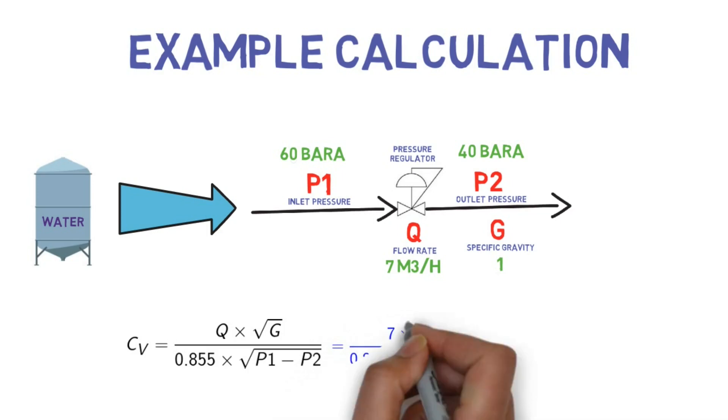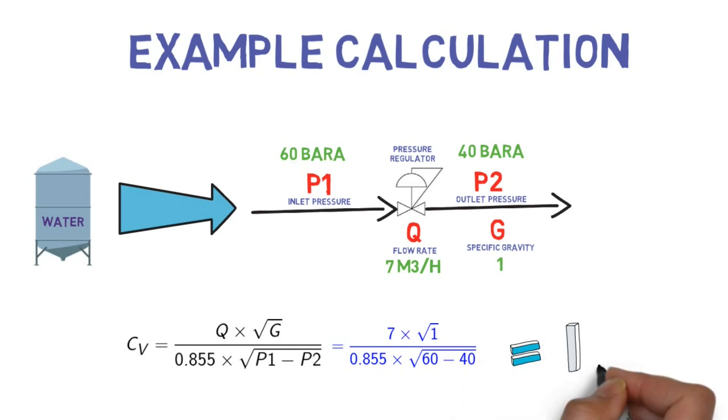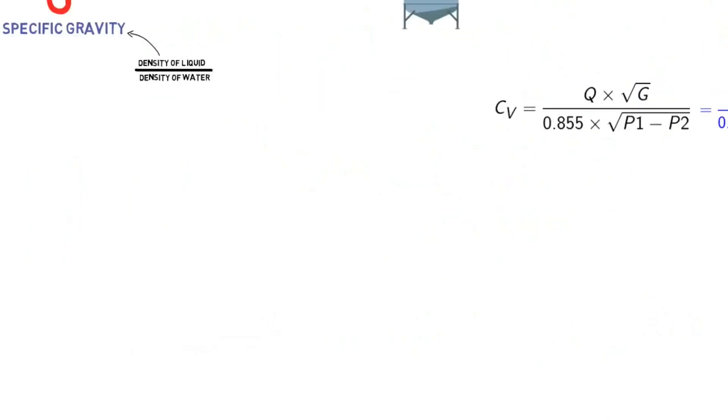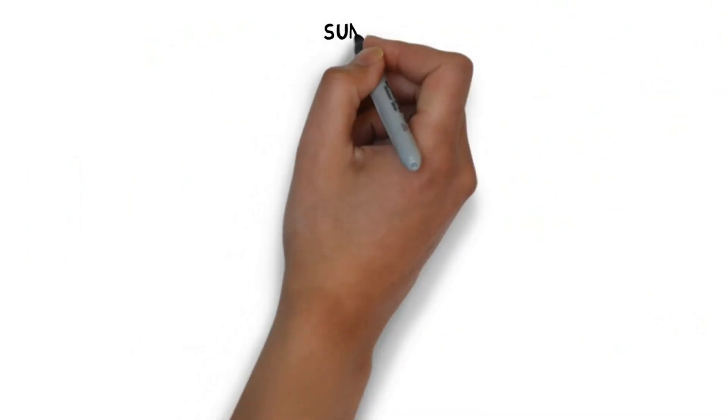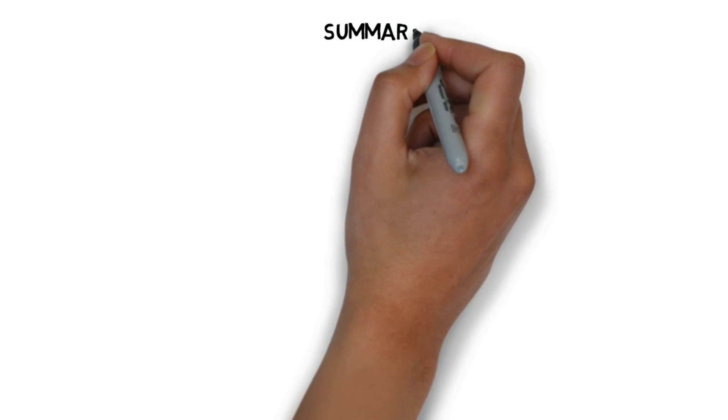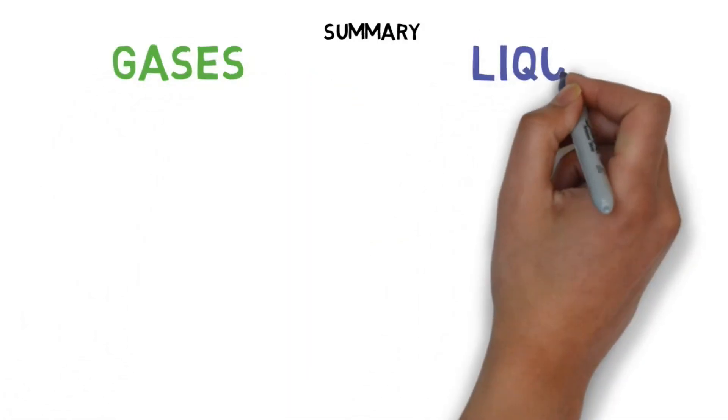Apply input data in formula. CV is 1.83. Let's summarize both the CV formulas, gases versus liquids.